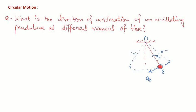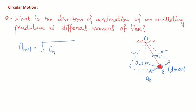The tangential acceleration a_t acts along the tangent to the arc of the circle. So a_r and a_t are present at any instant of time. If the pendulum is going up, a_t reverses direction. The net acceleration is given by the vector resultant: a_net = √(a_r² + a_t²), because a_r and a_t are always perpendicular to each other.